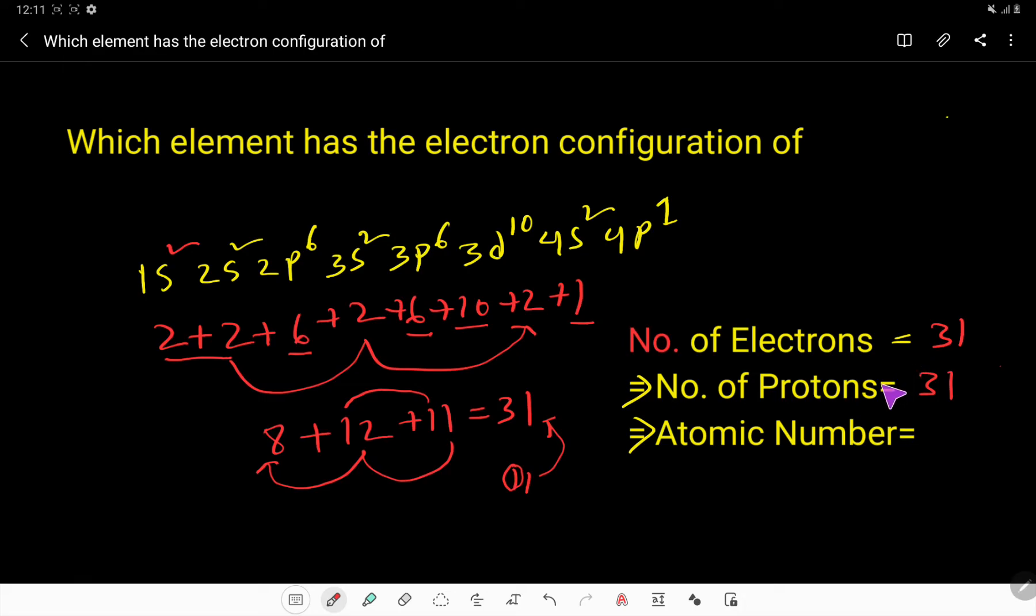We also know that the number of protons is equal to proton number, so 31. Now we have to find out the name of this element whose atomic number is 31 from the periodic table.